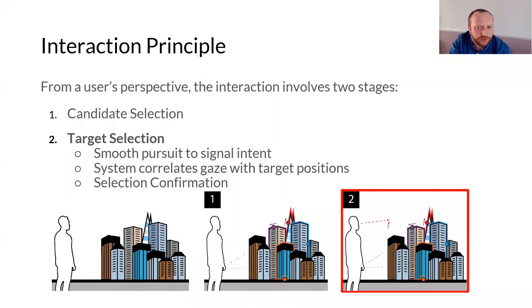Once the candidate targets have been revealed, the final stage is to select one of the targets. This is achieved using smooth pursuit eye movements to disambiguate one target amongst many, followed by confirming the selection.